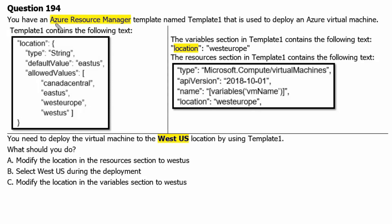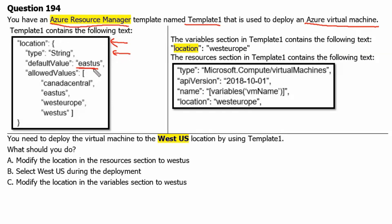You have an Azure Resource Manager template named Template1 that is used to deploy an Azure virtual machine. Template1 contains a location parameter of type string with a default value of East US. The allowed values are Canada Central, East US, West Europe, and West US.